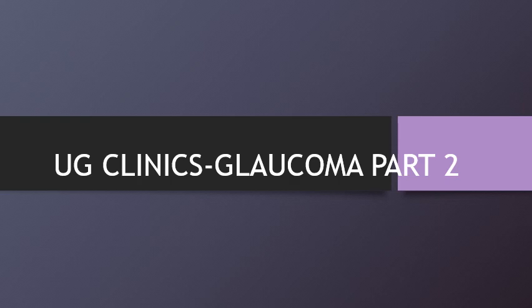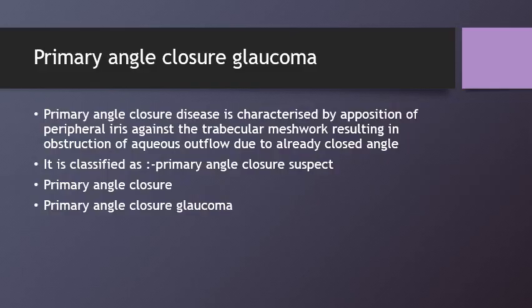Good morning. Today's UG Clinics is about angle closure glaucoma and the secondary glaucomas. Firstly, discussing about the primary angle closure glaucoma. The angle closure term refers to the occlusion of the trabecular meshwork by the peripheral iris.